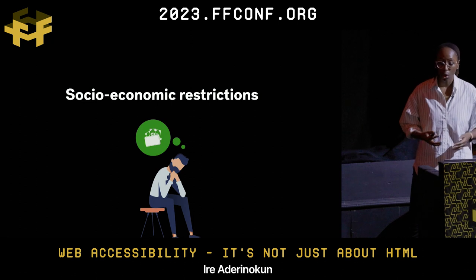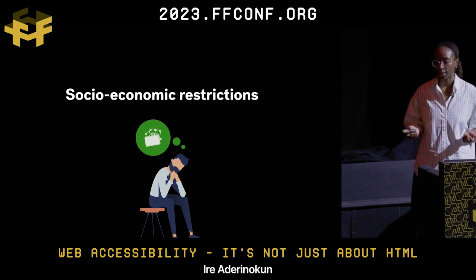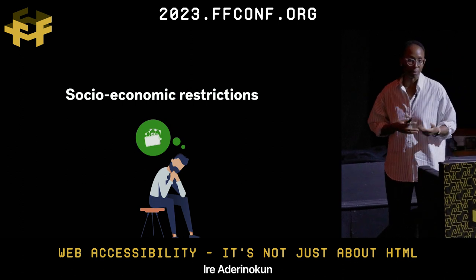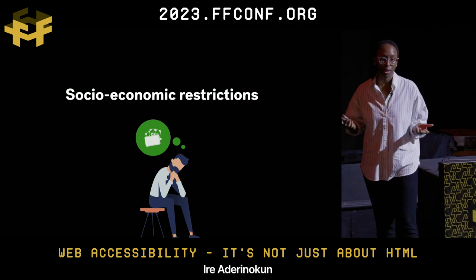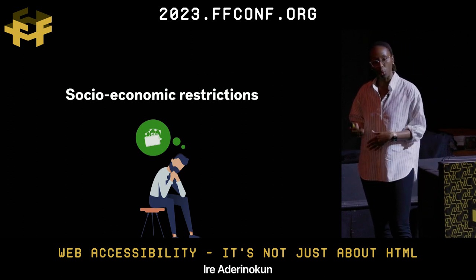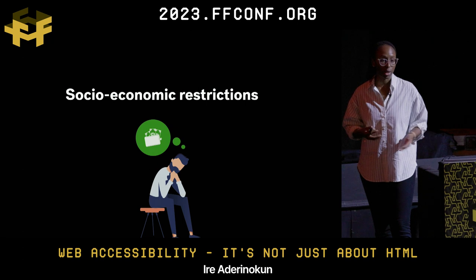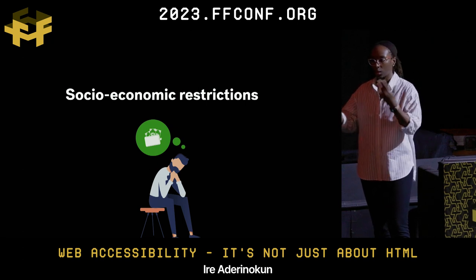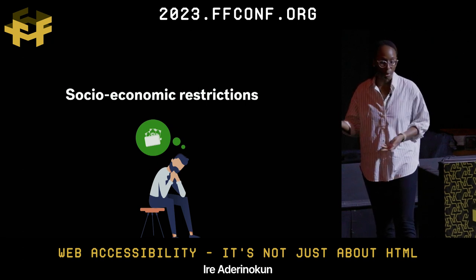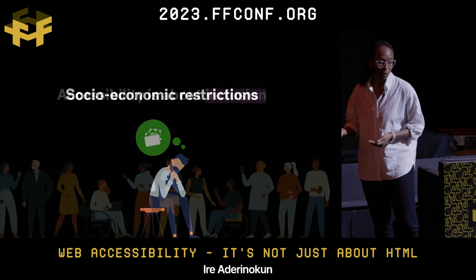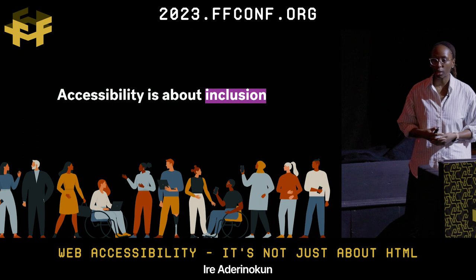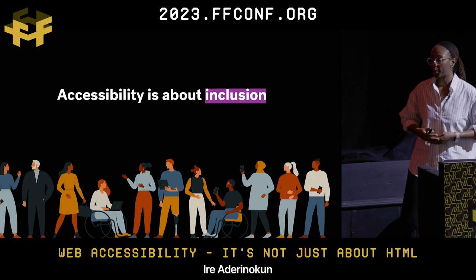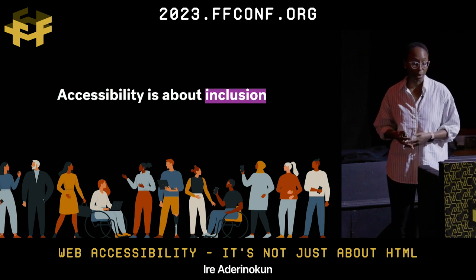Accessibility also refers to how people with socioeconomic restrictions can access websites. If you're from a certain country and are extremely data-conscious, that might limit what types of websites you can access because it may be too expensive to load a particular site. Accessibility is basically just about inclusion — making sure the website works for as many different people as possible.